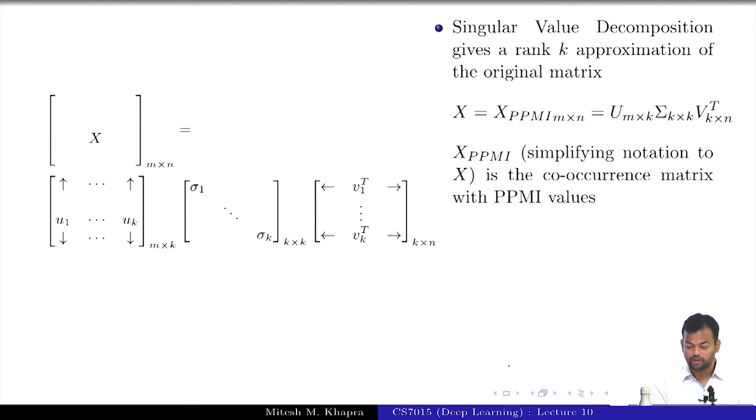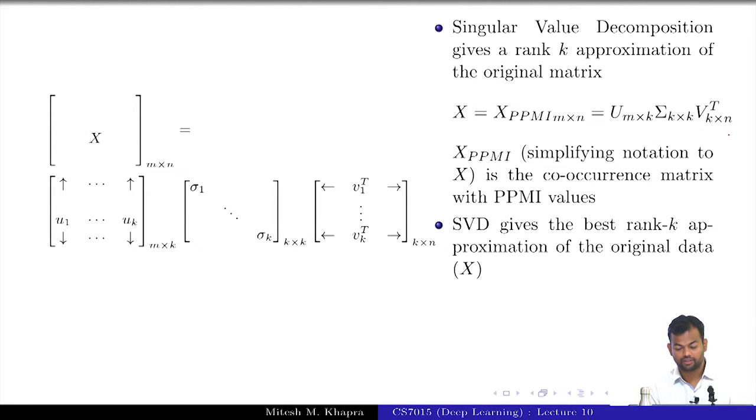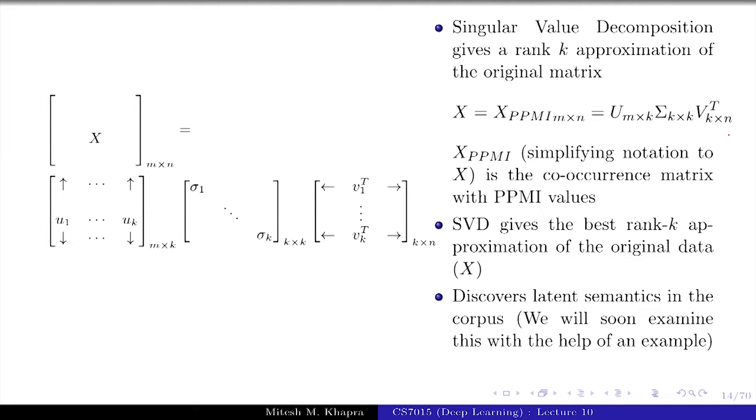Let me start defining a few things. From now on when I refer to the co-occurrence matrix, I would mean the X_PPMI matrix, which was the positive PMI, which was replacing all negative PMIs by 0. Just to not have this nasty variable I will just call it as X. We know that SVD gives us this reconstruction of the original matrix and it gives us the best rank k approximation of the original matrix and it discovers the latent semantics in the corpus. Everyone remembers this, that is what we were using PCA and SVD and auto encoders for, it was able to discover some latent semantics and we will concretize this intuition with the help of our current example.